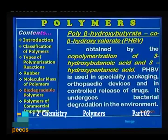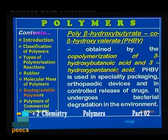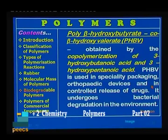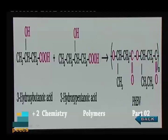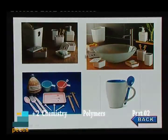What is PHBV? It is poly(β-hydroxybutyrate-co-β-hydroxyvalerate) — a copolymer obtained by the copolymerization of 3-hydroxybutanoic acid and 3-hydroxypentanoic acid. It is used in specialty packaging, orthopedic devices, and in the controlled release of drugs. It undergoes bacterial degradation in the environment. 3-hydroxybutanoic acid and 3-hydroxypentanoic acid undergo condensation to form PHBV. Different articles can be made from this biodegradable polymer.